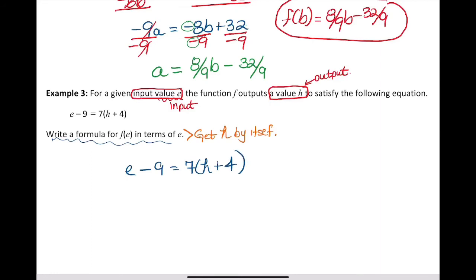For this example, this is the only one where we have parentheses. What have you been taught about parentheses? Clear them. And how do you do that? You distribute. We're going to distribute that 7. We didn't have to do this step first, but we might as well do it now. We've got e - 9 = 7h, because 7 times h is 7h, and 7 times 4 is 28. We want to get h by itself.